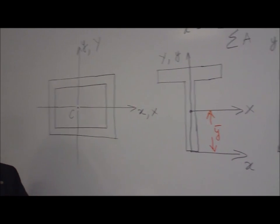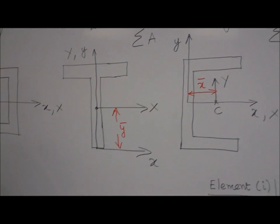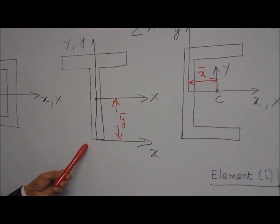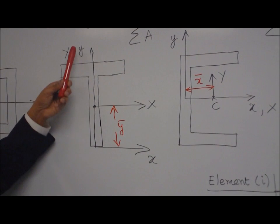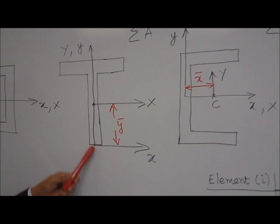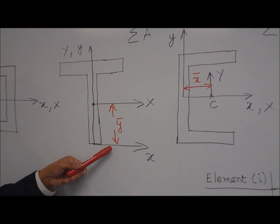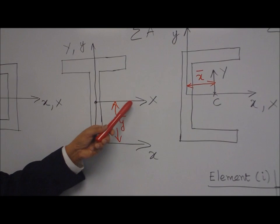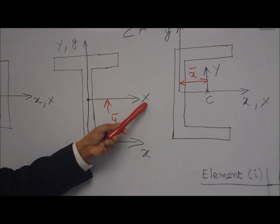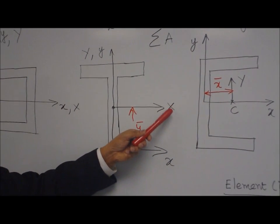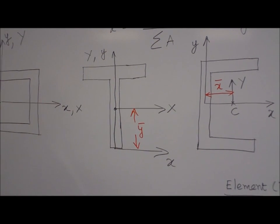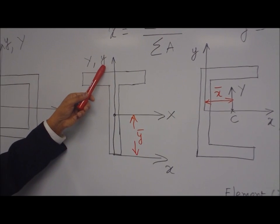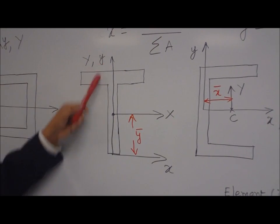Now let us look at the T-section. Here you have vertical symmetry, but there is no horizontal symmetry. So the centroid should lie on the vertical symmetry axis, but where on that axis is determined by the distance ȳ. Once you know ȳ, you know exactly where the centroid lies. The horizontal centroidal axis is capital X, and in the y-direction the centroidal axis coincides with the reference axis because that is the symmetry axis.